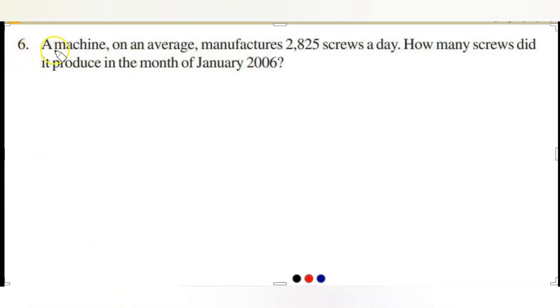Next, we will go to the sixth word problem. A machine on average manufactures 2,825 screws in a day. How many screws did it produce in the month of January 2006? Remember, in any year, January contains only 31 days. So you are given 2,825 screws were produced in a day. In one day, if it produces 2,825 screws, how many screws will it produce in 31 days?